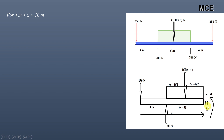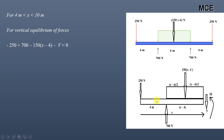Assuming shear acts in the downward direction and moment is anti-clockwise, for vertical equilibrium of forces equal to zero, we get minus 250 plus 700 minus 150 into (x minus 4) minus V equals zero. From this, we get the shear force in this portion equal to 1050 minus 150x newtons. This is the shear function for the second part of the beam.